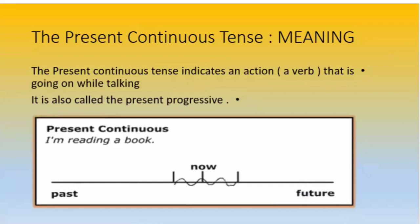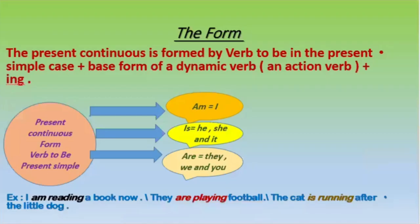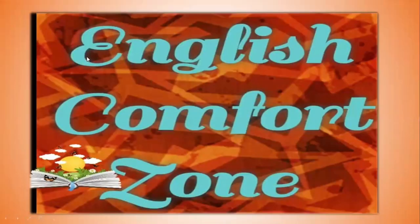First of all, let me remind you of the points we discussed before. We said that the present continuous means or indicates an action that is going on while talking. For example, 'I am eating a sandwich' — this means when I'm talking to you, I'm eating. The form of the present continuous consists of the verb 'to be' in the present simple plus a main dynamic verb plus the -ing form, like 'I'm reading,' 'are playing,' 'is running.'